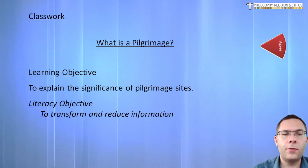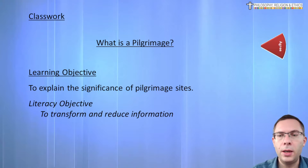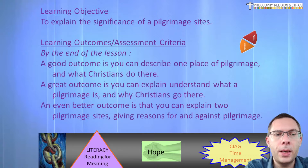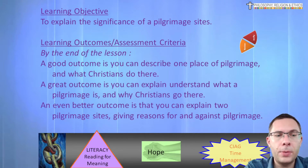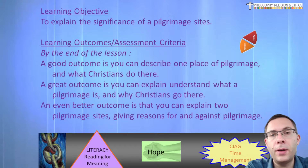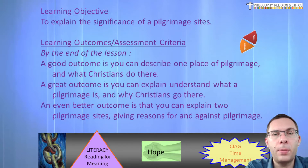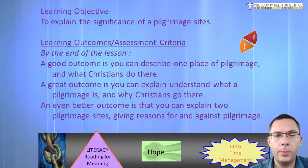We're going to transform and reduce information. Please make sure that you get the title written down as usual, and obviously any work you do, you will need to make sure you send through to your teachers. It's going to be a good outcome if you can describe one place of pilgrimage and what Christians do there. It's going to be great if you can explain what a pilgrimage is and why Christians go there. And even better if you can explain two pilgrimage sites, giving reasons for and against going on pilgrimage, because you could be asked an evaluative question on this — why might people choose to go on pilgrimage or why might they not? Or are they obliged to? Or you could simply be asked to explain two things that happen at pilgrimage, or two reasons why people might choose to go on pilgrimage.